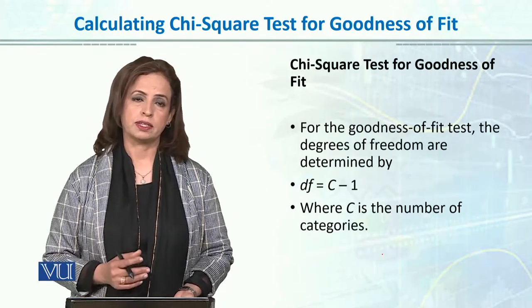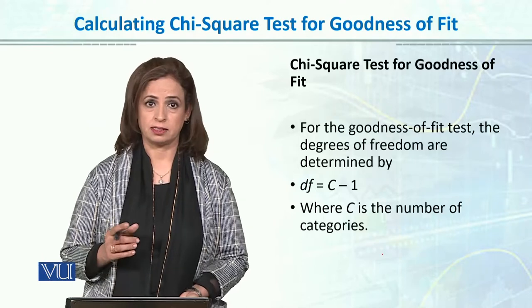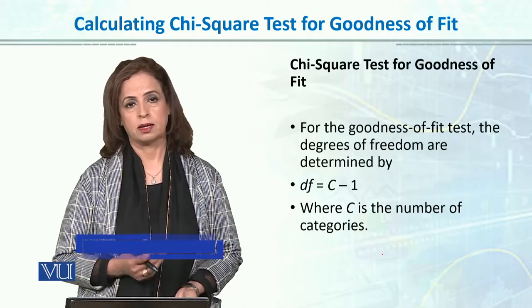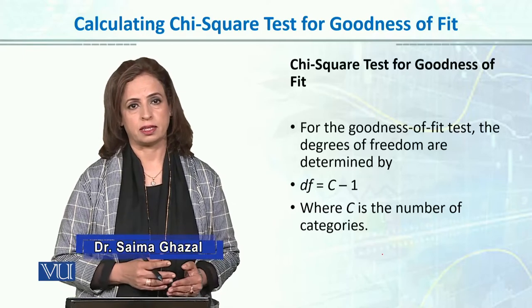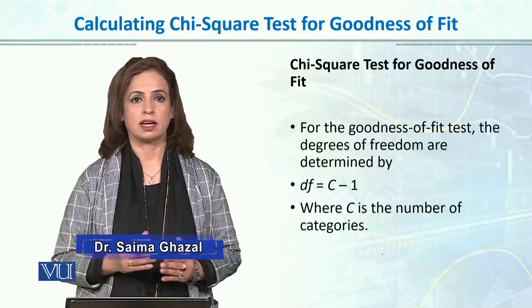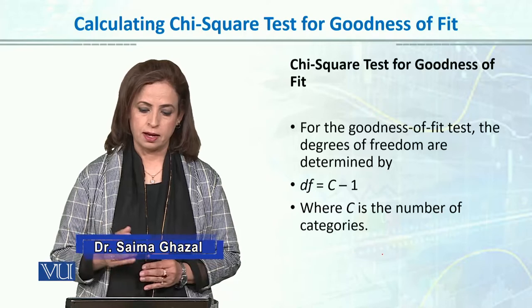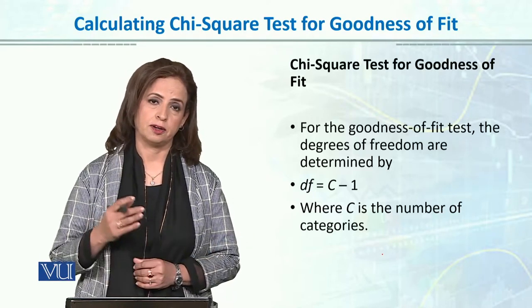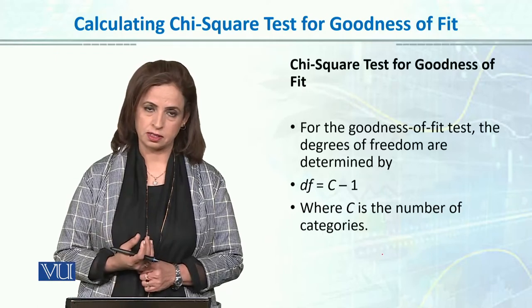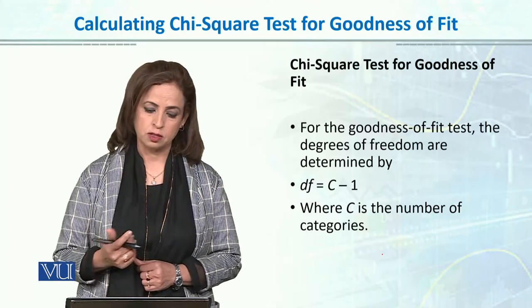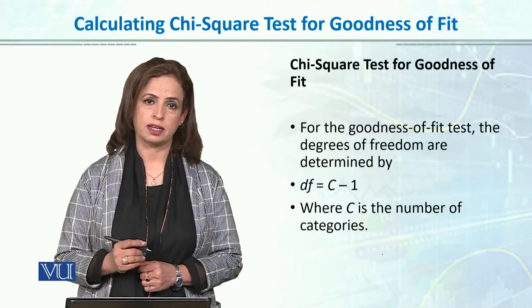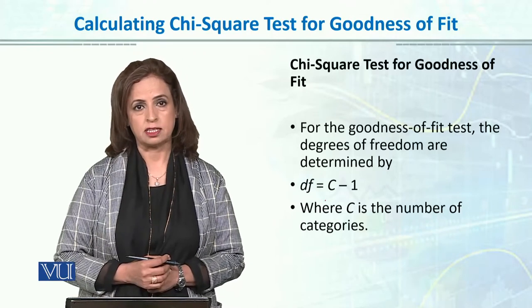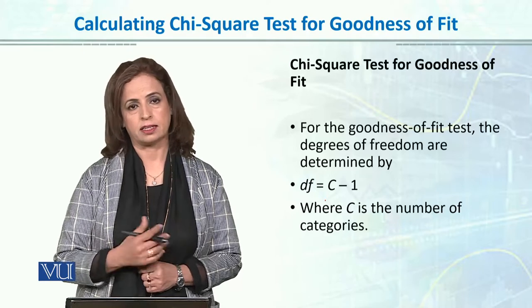In the chi-square test, the first step is forming the null and alternative hypothesis — whether it is 'no preference' or 'no difference.' After that, we calculate degrees of freedom, just as we do in parametric tests. For chi-square goodness of fit, degrees of freedom = c minus 1, i.e., number of categories minus 1.